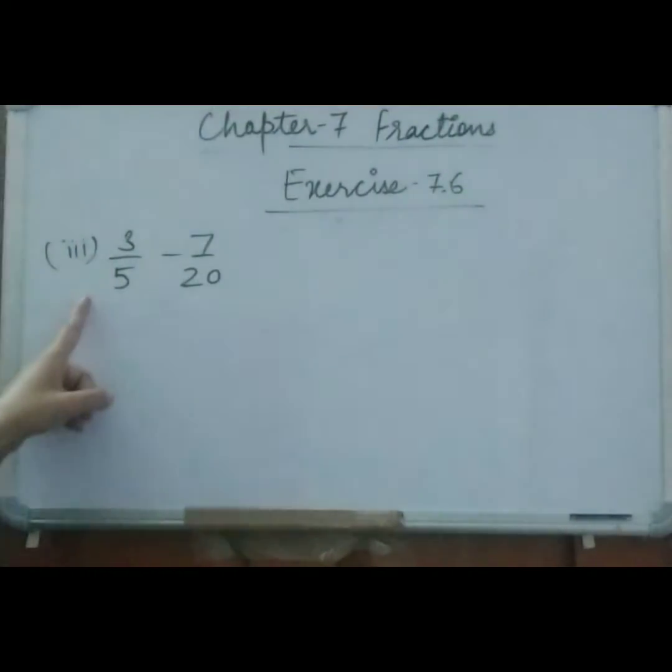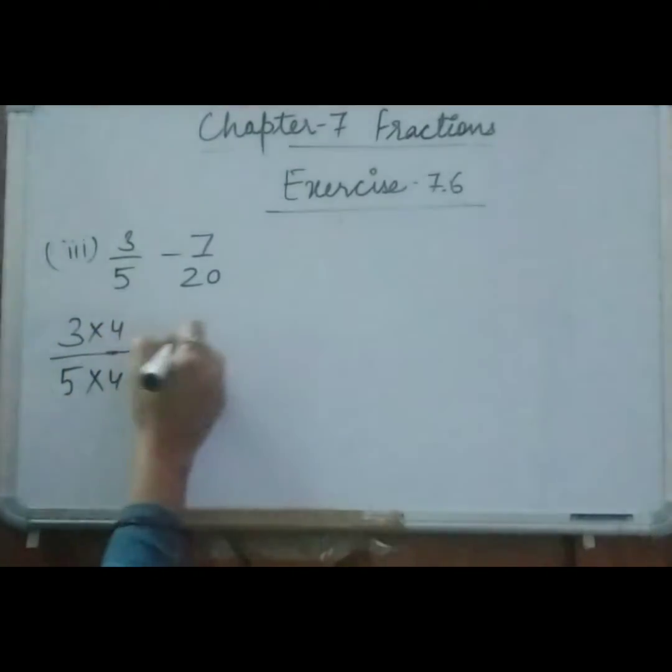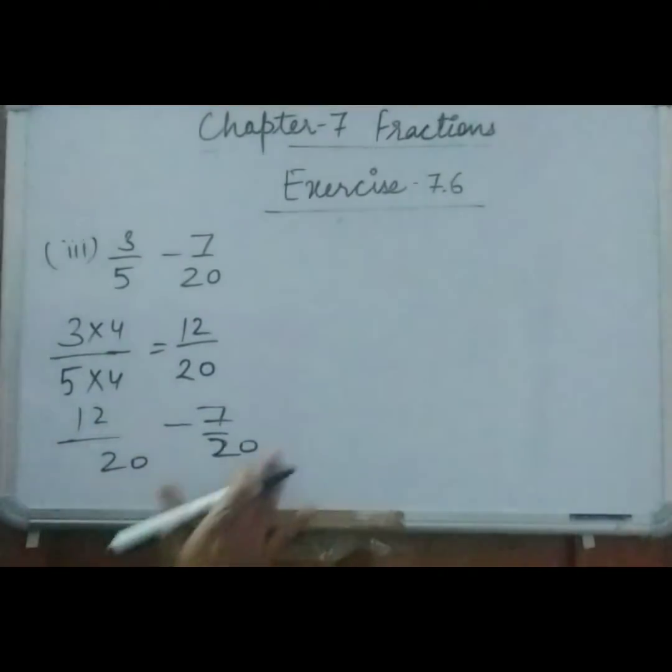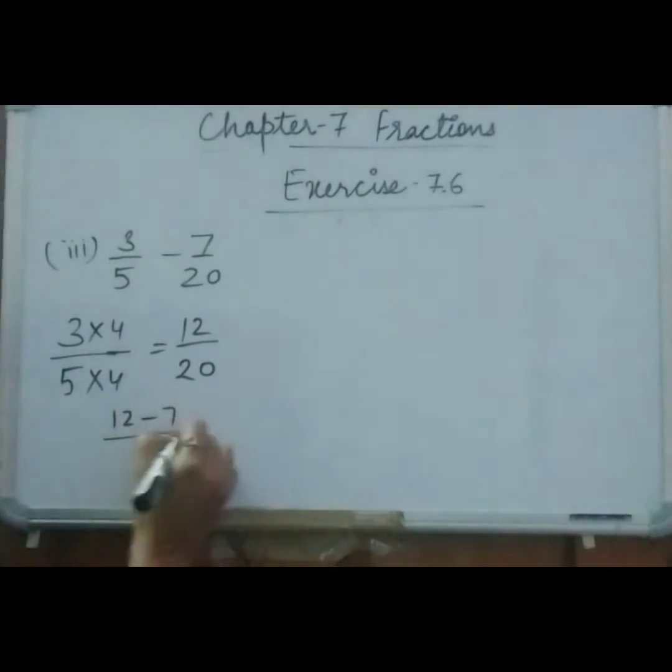Now see the next one. It is 3 upon 5 minus 7 upon 20. Now again we will make denominator same. So here we can make this 5 as 20. That 3 upon 5, 5 into 4 is 20, and 4 times 3 is 12. So it is here 12 upon 20 minus 7 upon 20. Or we can write it like this also, 12 minus 7 upon 20. So 12 minus 7 will be 5.